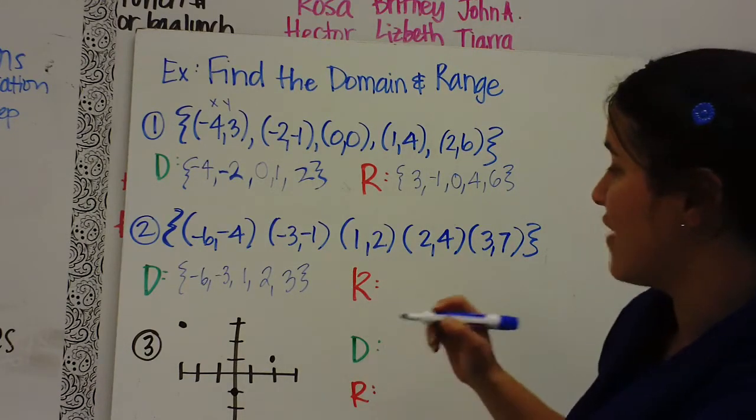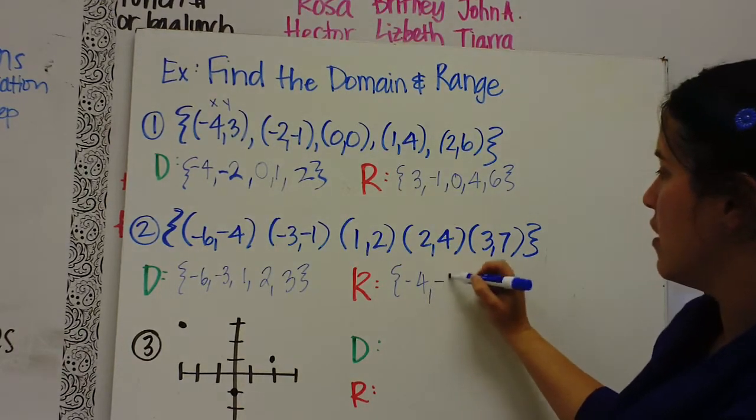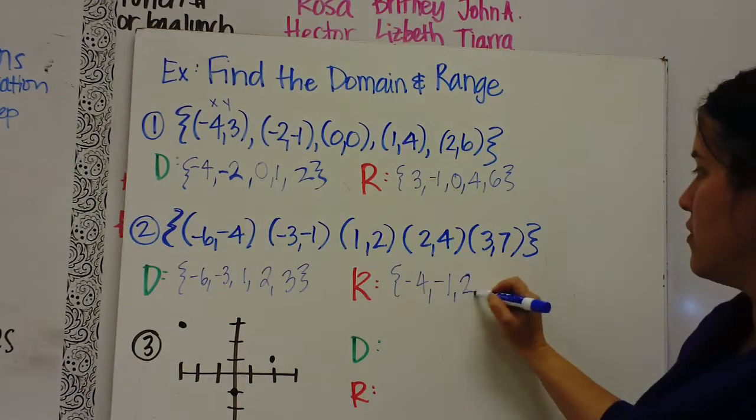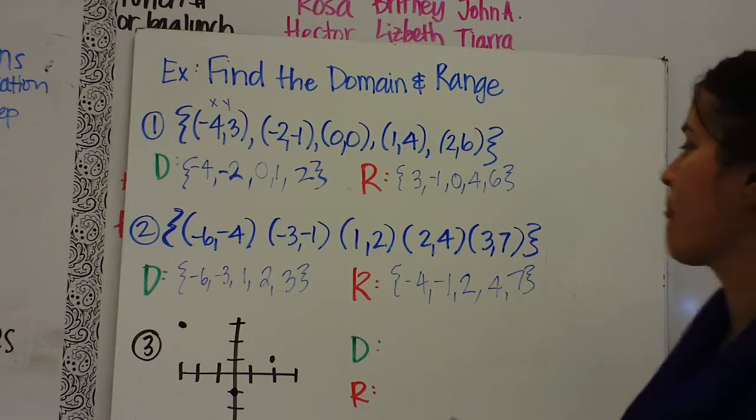Your range are your Y values, the second value. So negative 4, negative 1, 2, 4, and 7.